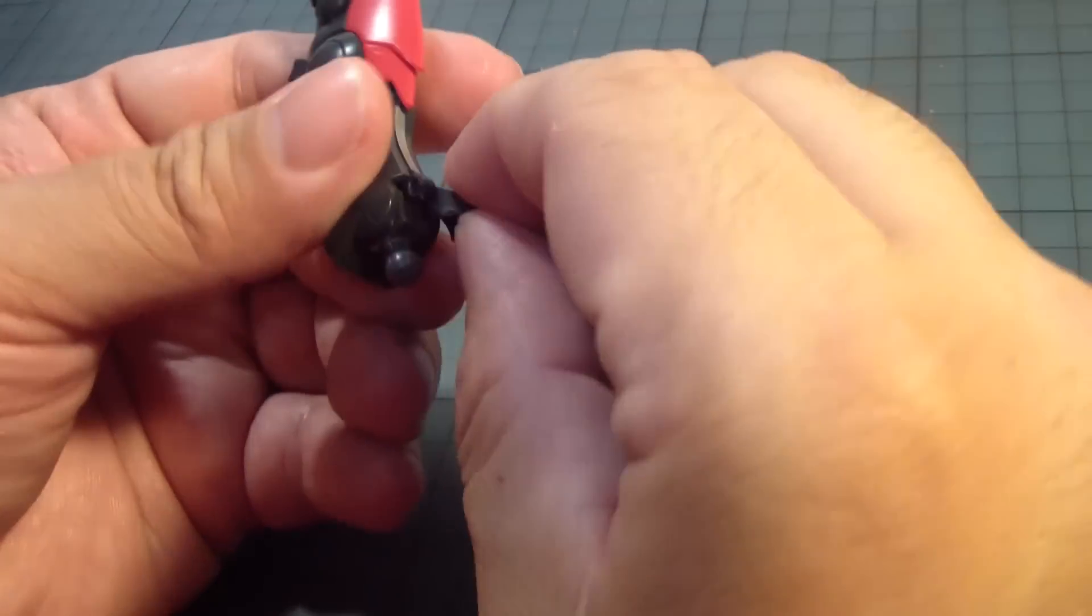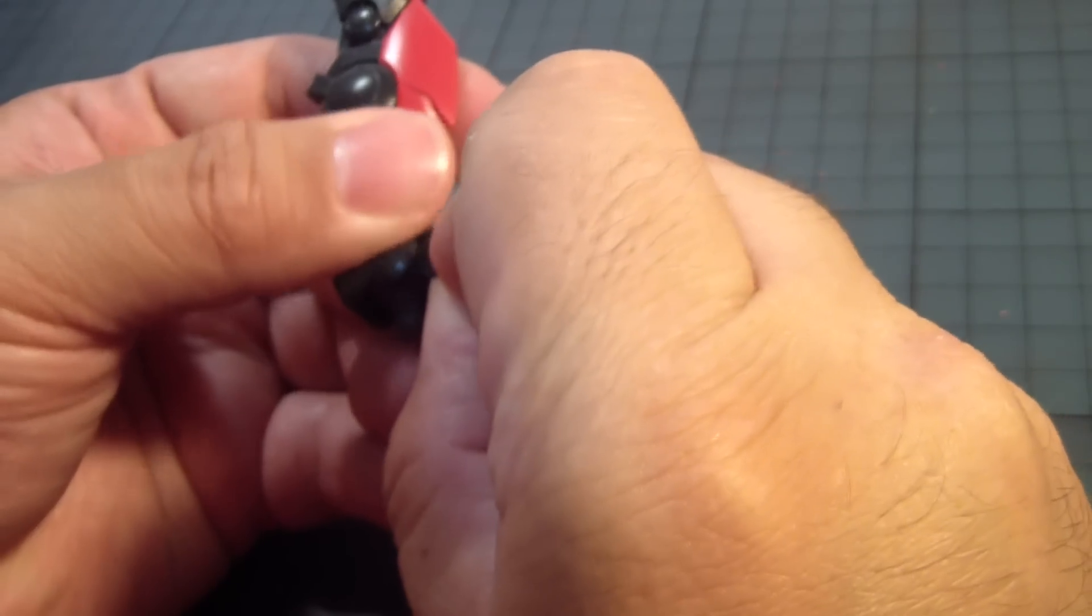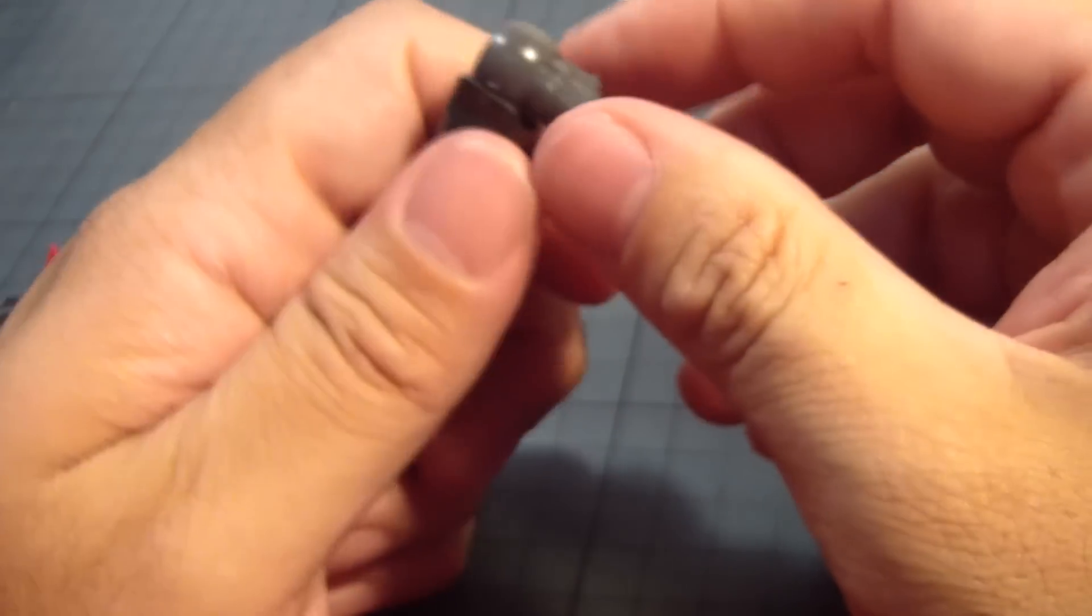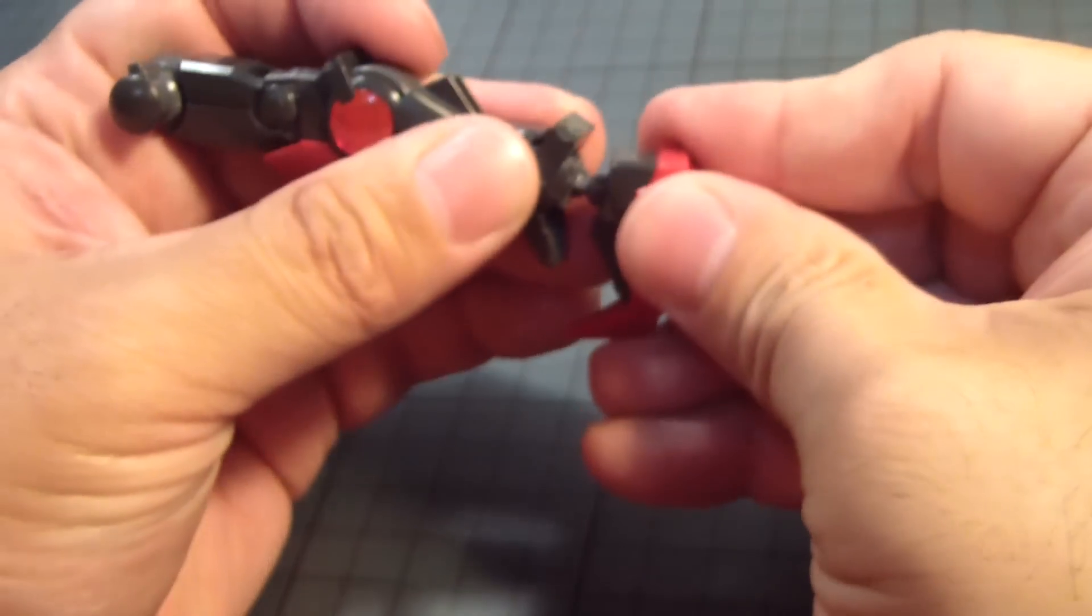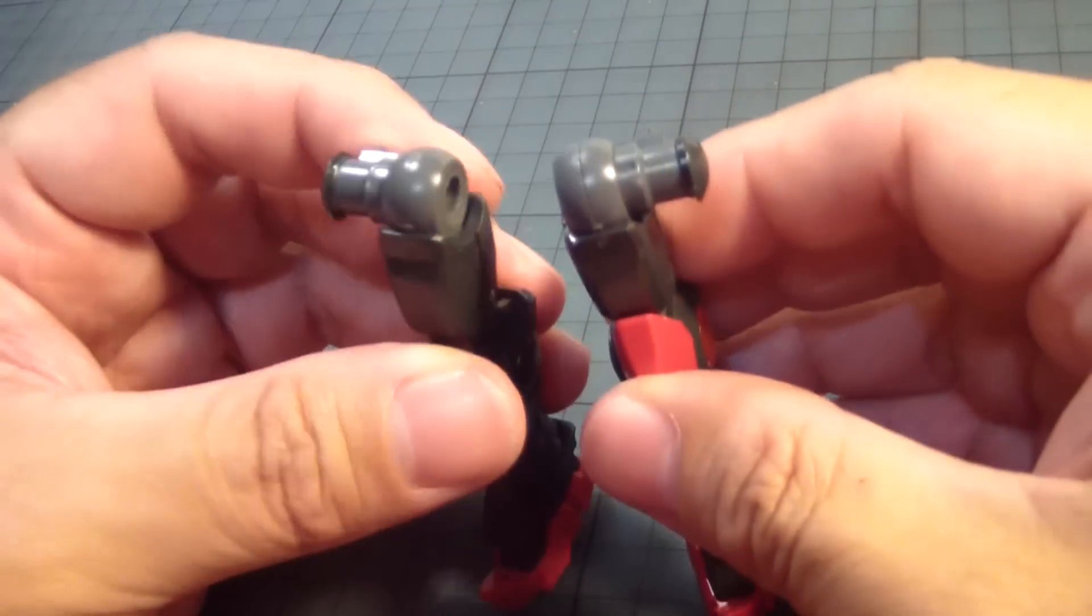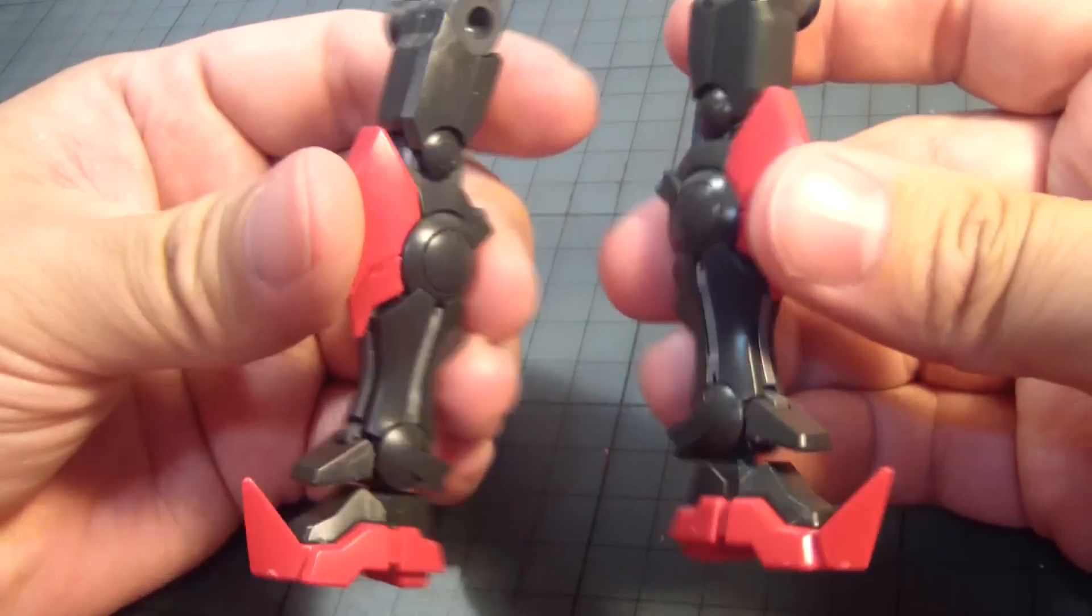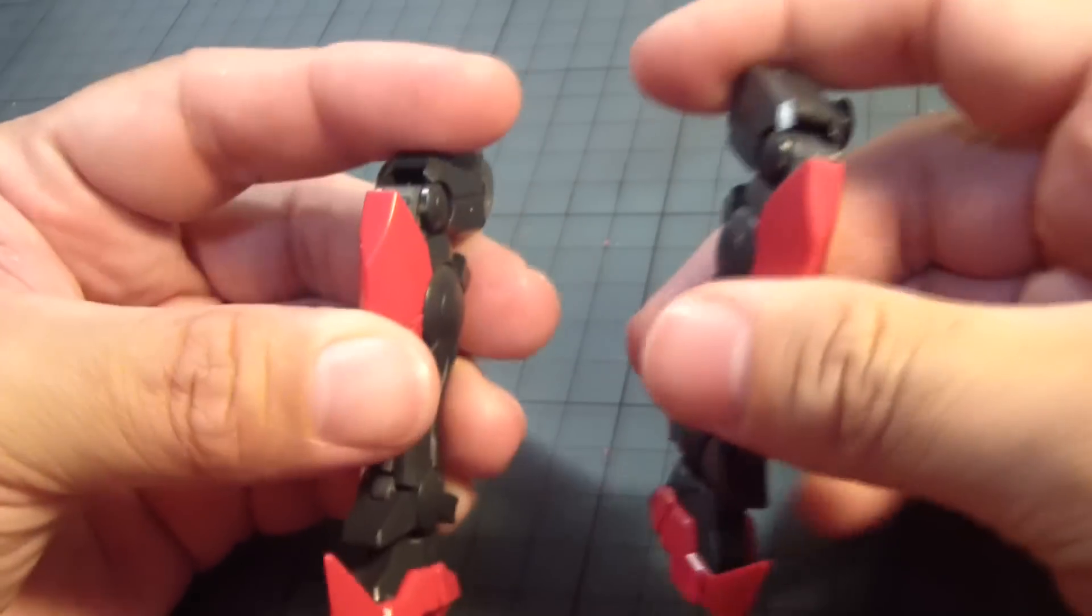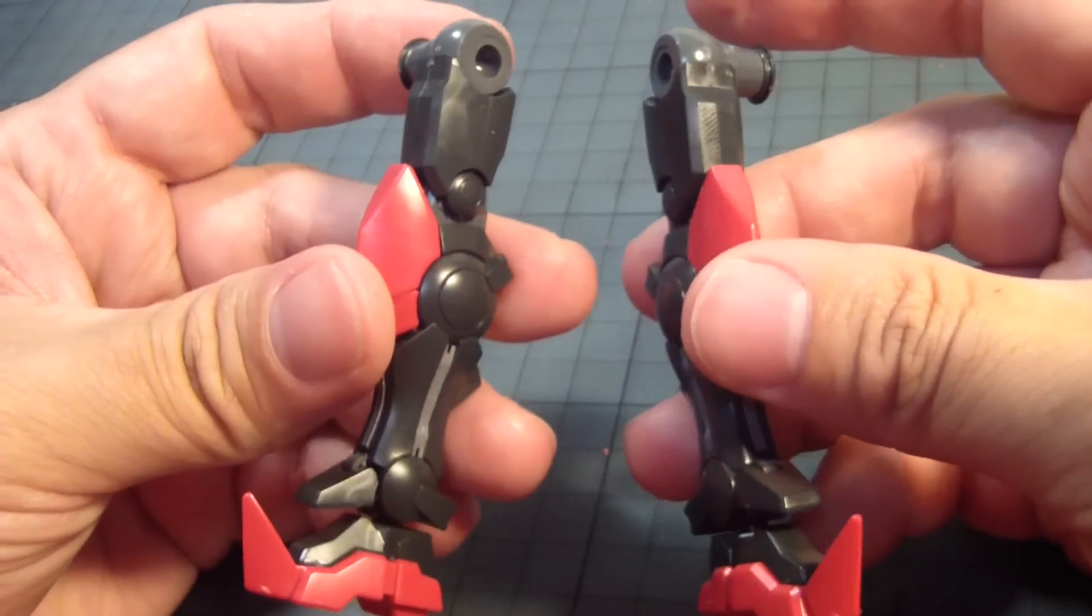Then we have this part, goes here. And then finally the joint that connects the leg to the waist unit. Once we... we'll get to that in a moment. And then the foot. And there you have it. The legs of the dark matter Exia are complete and unique. Pretty cool, pretty nice. Okay, let's move on to the next part of the build.